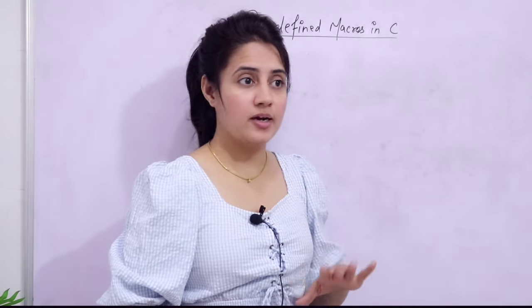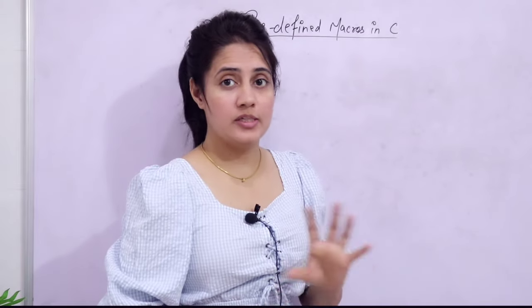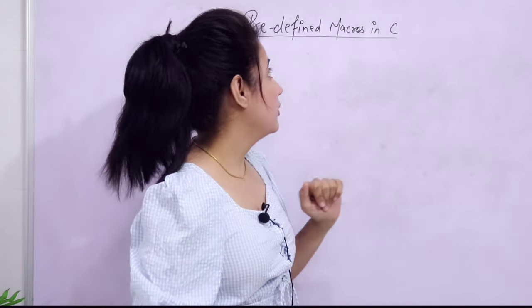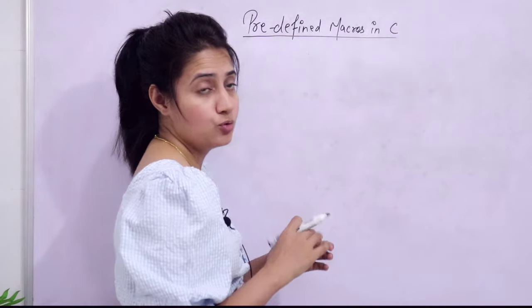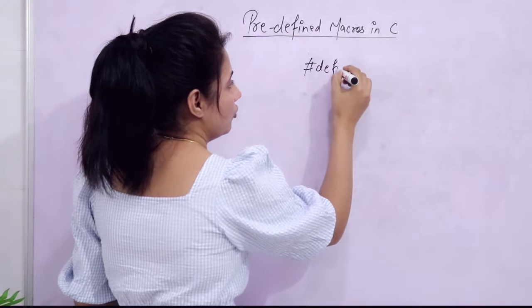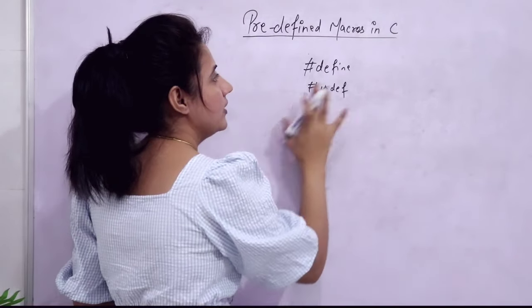Now there are some predefined macros in C that you can use directly. There are also conditional macros — some preprocessor commands that work like conditional commands. Just like we use if-else in our program to check a condition, we have macros like #if and #else. We will discuss all of these in this video. How to define our own macro we covered in the previous video using #define, and using #undef you can undefine that macro. But in C we also have some predefined macros you can use directly.